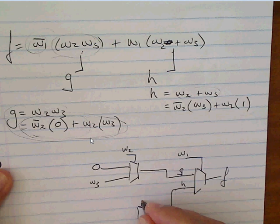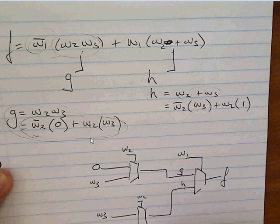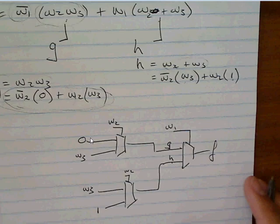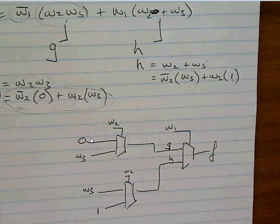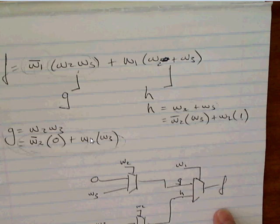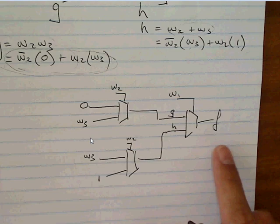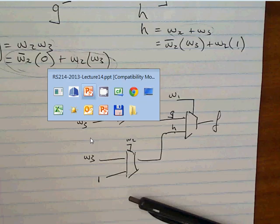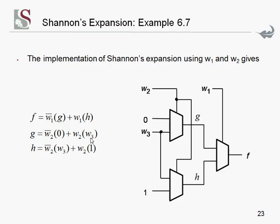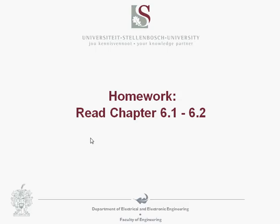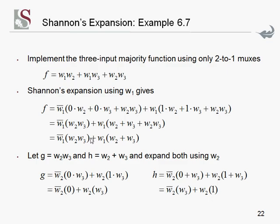This circuit is exactly the same as the original large function. You can also implement it using a 4-to-1 multiplexer — you would do exactly the same process, but extract both W1 and W2, ending up with a single 4-to-1 multiplexer that looks very similar to what we derived here.